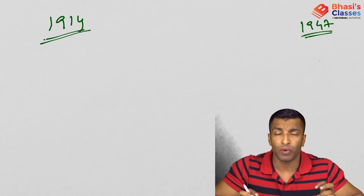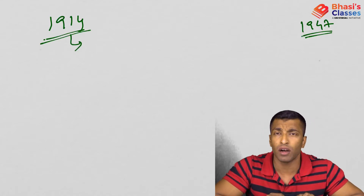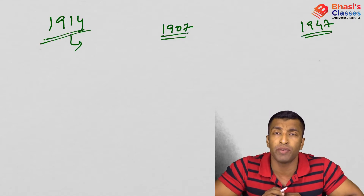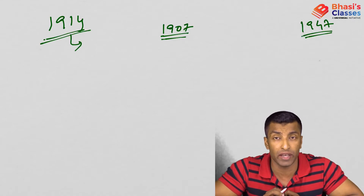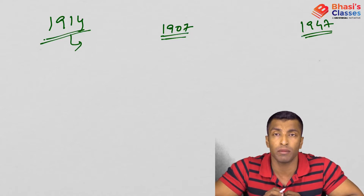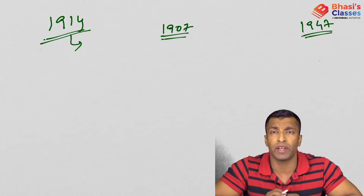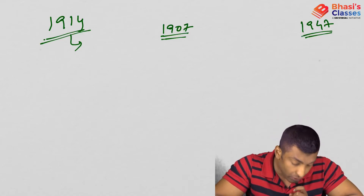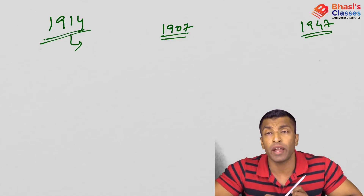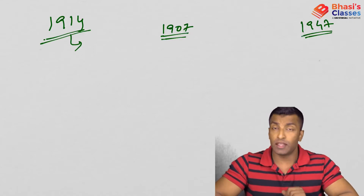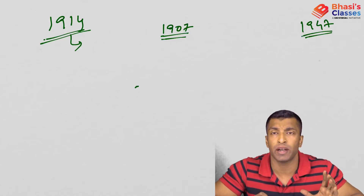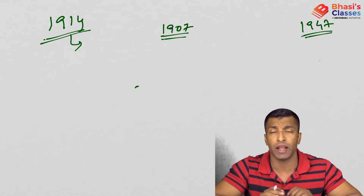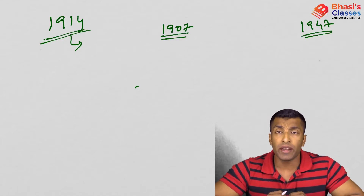In 1914, the significance is that Tilak was released from jail. If you remember, in 1907 there was the Surat split between moderates and extremists, after which the movement got weakened. Now Tilak was released. At this point, there was a question in the minds of nationalists whether to support the Indian troops' involvement in World War One. The war was between Germany and the Ottoman Empire on one side, and Britain, France, Russia, and later the US on the other.